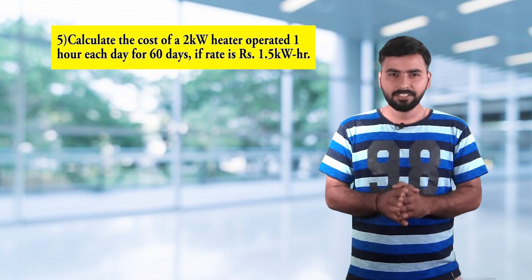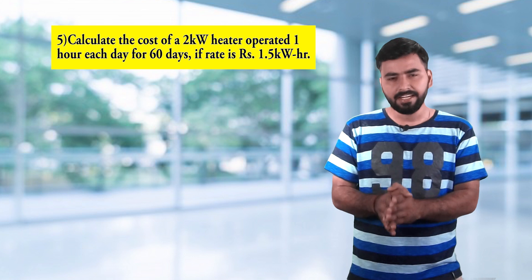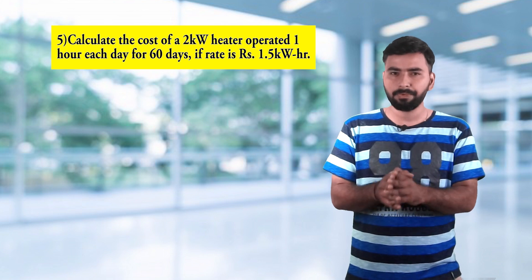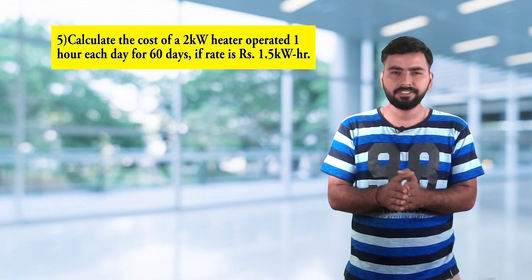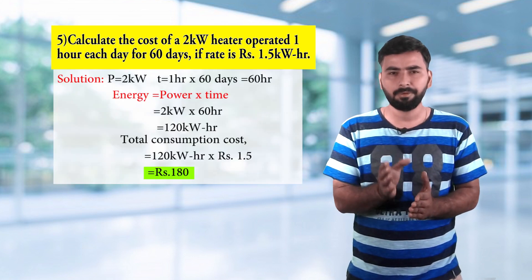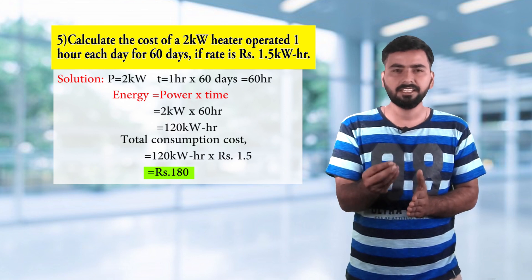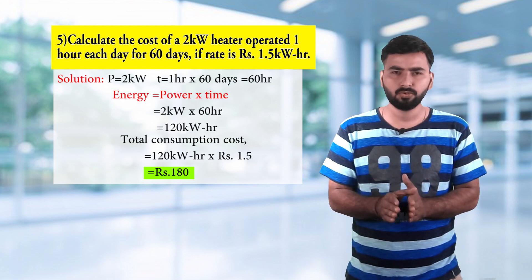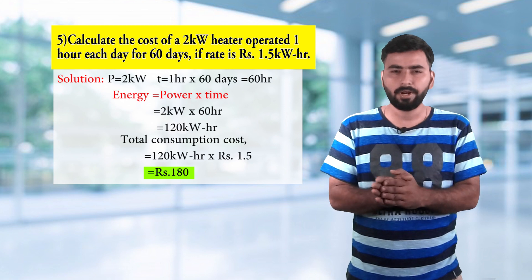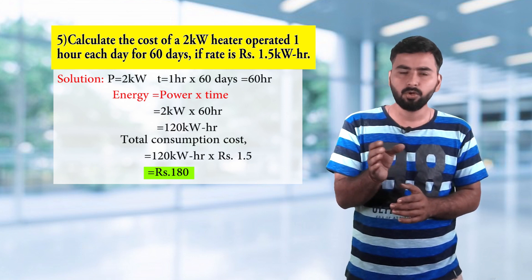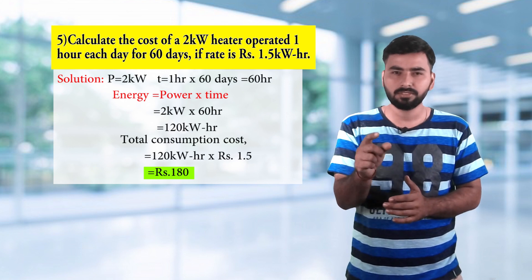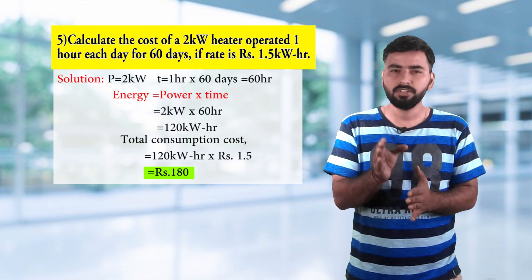The fifth question is: calculate the cost of using a 2 kilowatt heater operated for 1 hour per day for 60 days if the rate is 1.5 rupees per kilowatt hour. Power equals energy upon time, so energy is power into time. Power is 2 kilowatt, time is 1 hour per day for 60 days, so 60 hours. Energy consumed is 120 kilowatt hour. At 1.5 rupees per kilowatt hour, the total consumption cost is 120 kilowatt hour into 1.5 rupees, which equals 180 rupees.